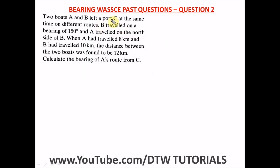Question two is another bearing WAEC past question. Two boats A and B left a port C at the same time on different routes. B traveled on a bearing of 150 degrees — this is a three-digit bearing. For three-digit bearing, you always start from the north and go clockwise. So 150 degrees clockwise from north puts B in the south-east direction from C.